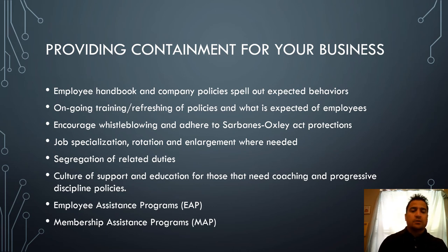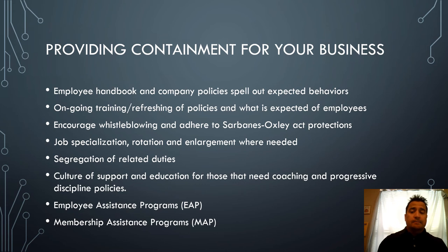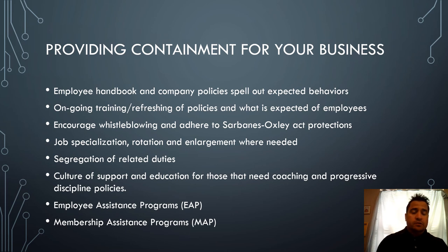You want to provide a culture of support and education for those who need coaching, and also have progressive discipline policies for those who aren't responding to that support. For bottom performers, make sure you're coaching and educating them and giving them what they need to succeed. That way they're doing things the right way and are less likely to engage in deviant behavior. When deviant behavior does occur, enforce the proper discipline policies — correct the actions or, if necessary, terminate — but most people do want to perform well and will listen to coaching.